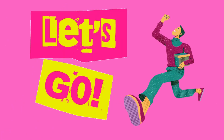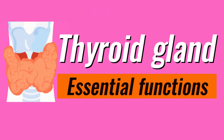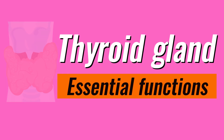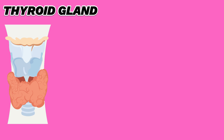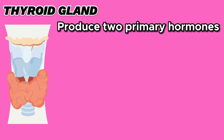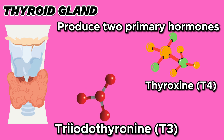First, let's talk about the thyroid gland and its essential functions. The thyroid gland is a butterfly-shaped organ located in your neck, and it plays a significant role in our body by producing two primary hormones: thyroxine (T4) and triiodothyronine (T3).